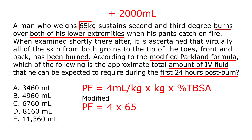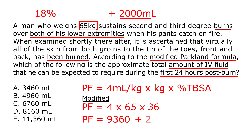We have 4 mL/kg, a weight of 65 kg, and since both lower extremities are involved, each at 18%, the TBSA is 36%. That gives 4 × 65 × 36 = 9,360 mLs for the regular Parkland formula. Adding the modified Parkland additional 2,000 mLs brings the total to 11,360 mLs, which corresponds to choice E.